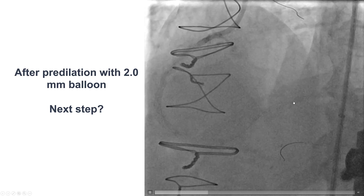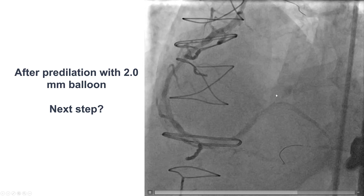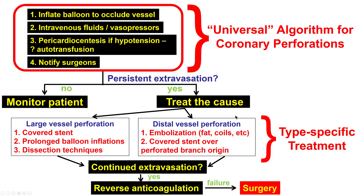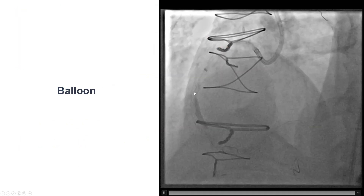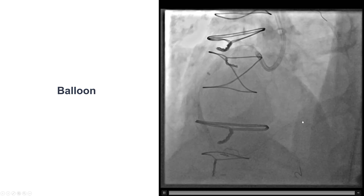Likely that polymer wire had gone into a small branch. So what to do next? This was a large vessel perforation. The first step is to inflate a balloon, and then for large vessel perforations, deliver a covered stent. Also, this being a bypass patient, there is concern for loculated effusions developing and causing compression of the cardiac chambers.